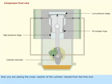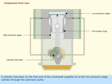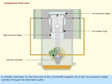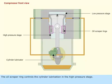Now you are seeing the cross section of the cylinder viewed from the free end. A cylinder lubricator on the free end of the crankshaft supplies oil to the low pressure stage cylinder through the lubricator quills. The oil scraper ring controls the cylinder lubrication in the high pressure stage.